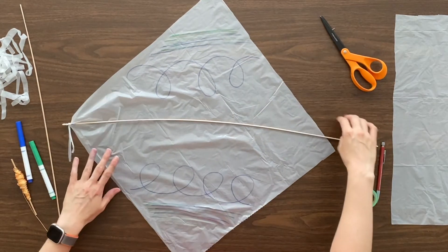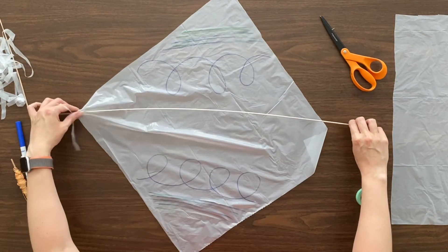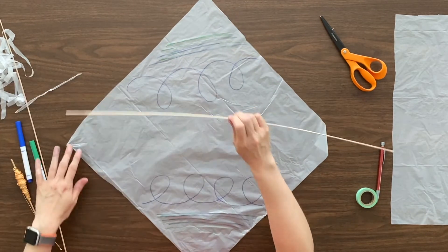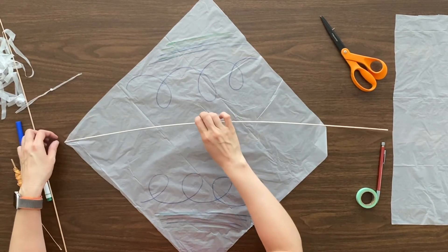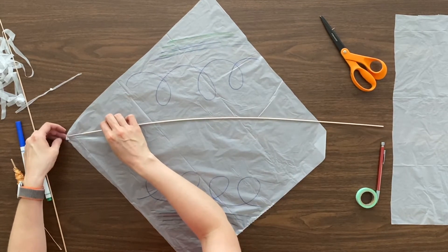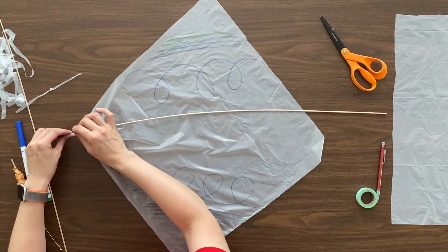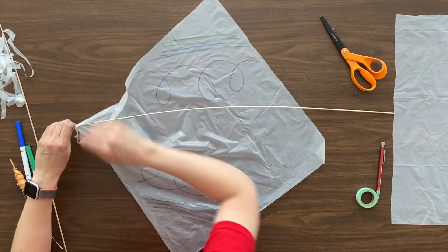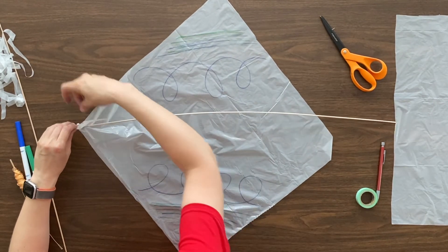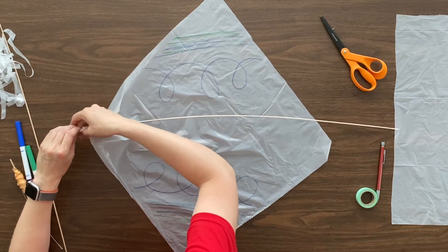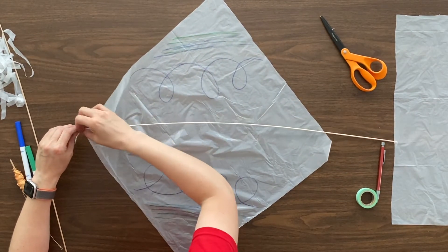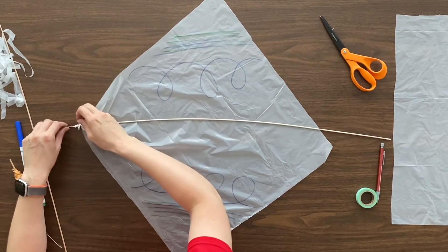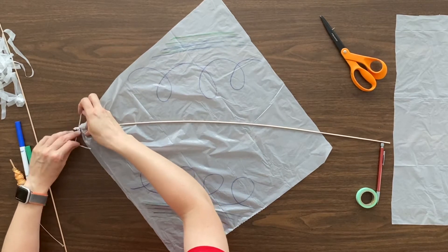Now, this part's a little tricky, especially if your dowel moves when you try and do it. Let's try that again. This time, I'm just going to fold the plastic a little bit over the end of the dowel, and then I'm going to wrap my plastic strip around it and tie it in a nice knot.